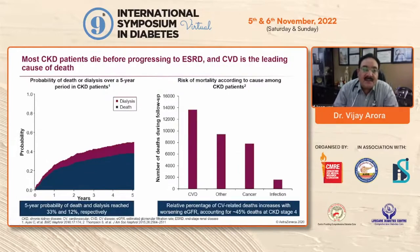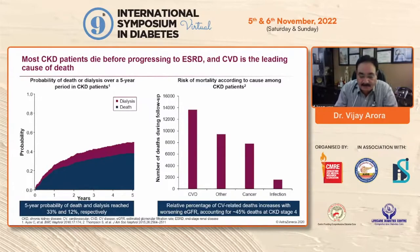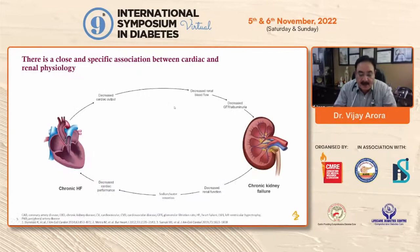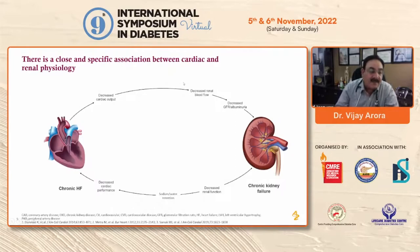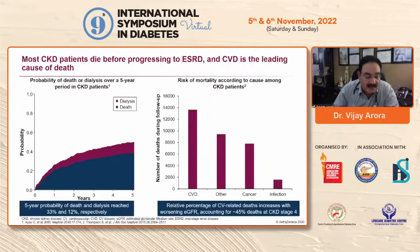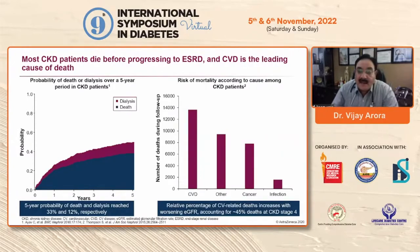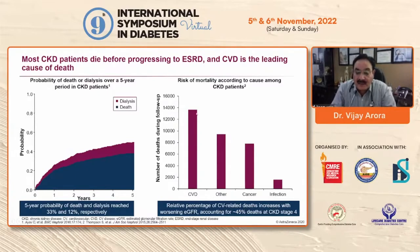The most sick patients die before progressing to end-stage renal disease, and CVD is the leading cause of death. The probability over a five-year period: 12% of people reach dialysis after five years, and 33% die within five years of CKD. Among causes of mortality in CKD patients, CVD is the most common, followed by others, then cancer, and lastly infections.